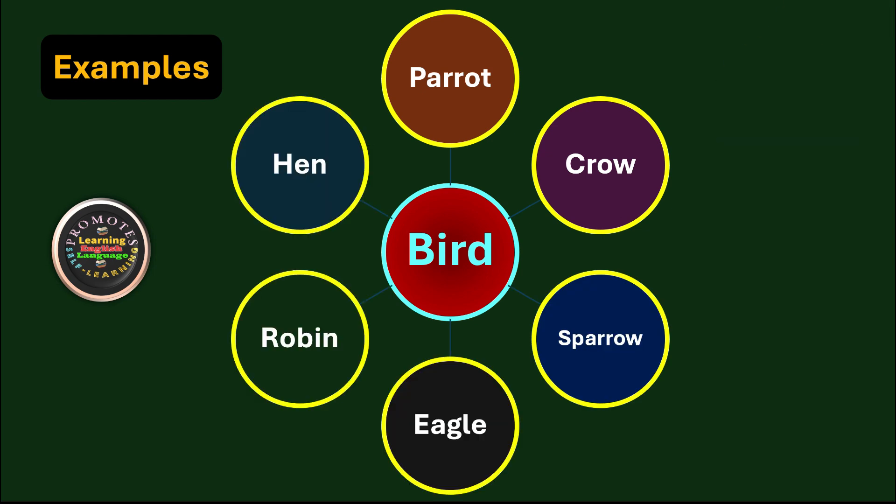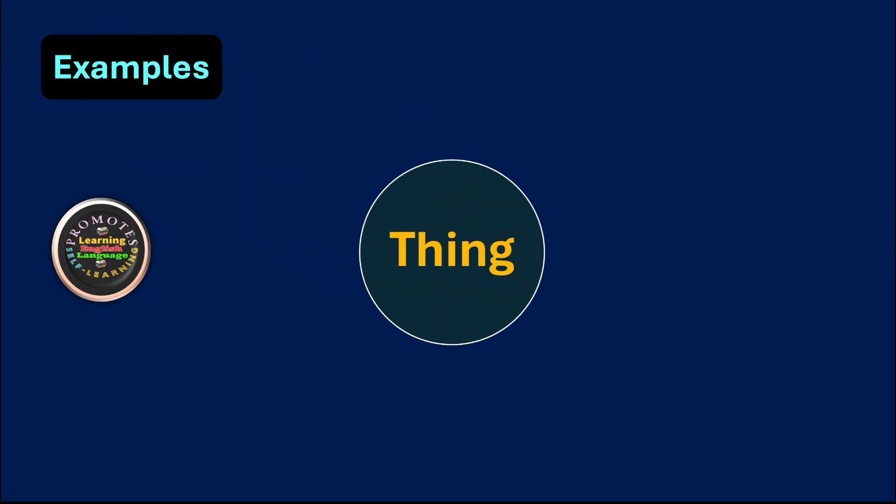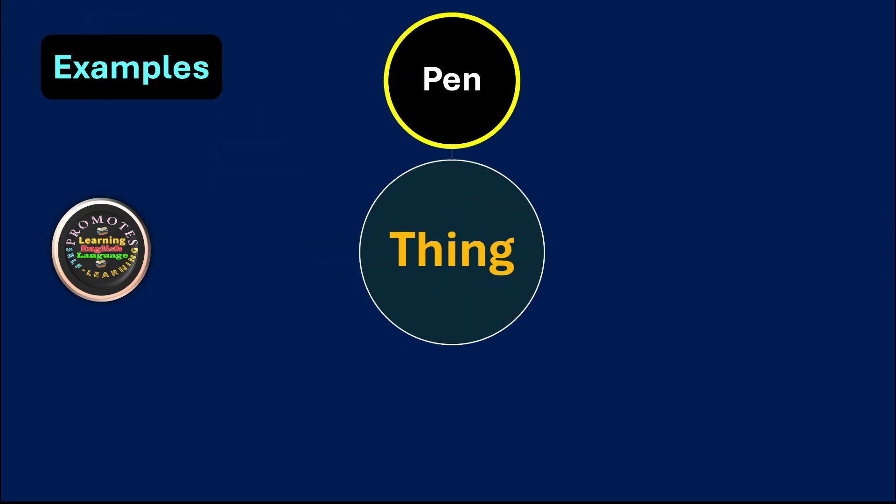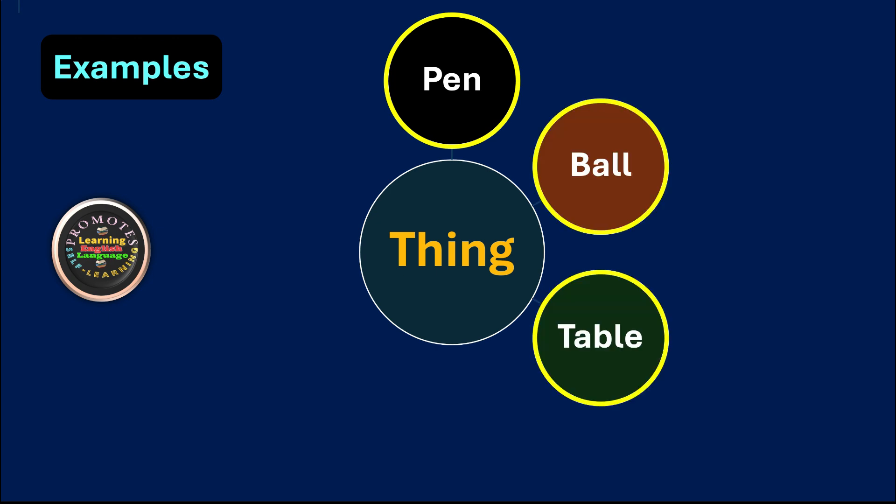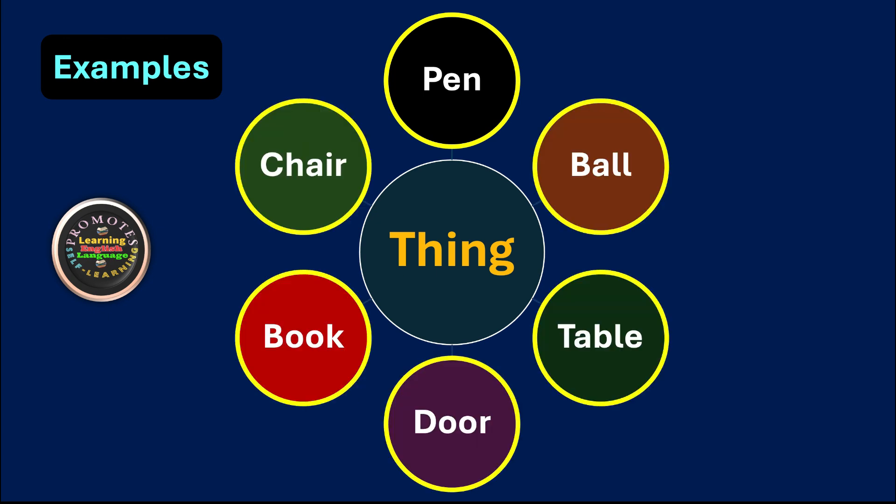We have some more examples about noun - that is to say, thing. Like for example: pen, ball, table, door, book, and chair. All these things are nouns. So what we come to conclude is that a noun is the name of a person, place, animal, bird, or thing.